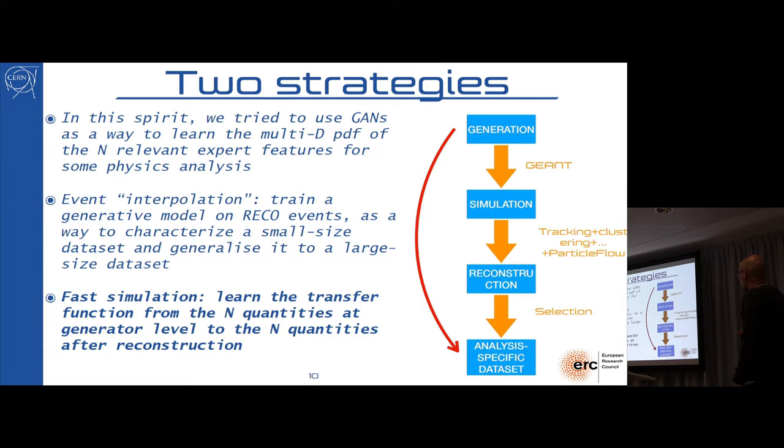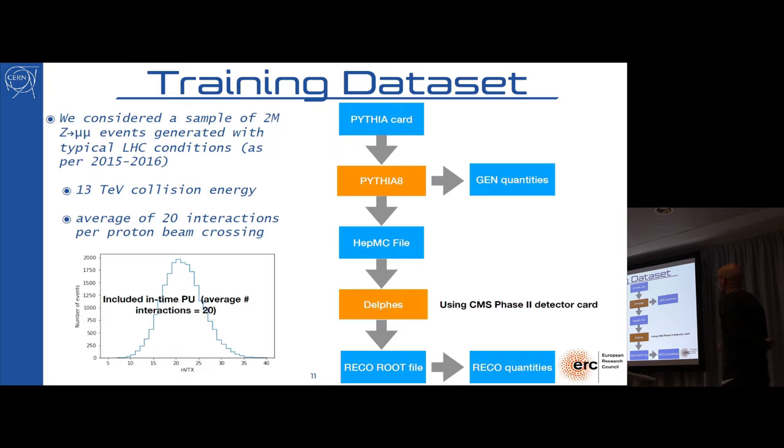The other strategy is what we call a fast simulator, which is that you learn the function, so you describe all this process as a smooth function that goes from your generator level to your reconstructed level, but again you limit yourself to the n quantities that you care about. What you are learning is the detector response function times the reconstruction response function times whatever selection you apply to skim your data.